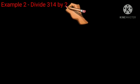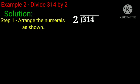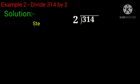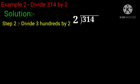Example 2: Divide 314 by 2. Solution. First, arrange the numerals as shown. Now compare the leftmost number with the divisor. The leftmost number here is 3 and the divisor is 2. So we can divide 3 by 2. Divide 3 by 2. We know that 2 ones are 2 and 2 twos are 4 which is greater than 3.